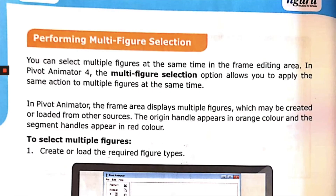Performing multi-figure selection: You can select multiple figures at the same time in the frame editing area. The multi-figure selection option allows you to apply the same action to multiple figures simultaneously. The frame area can display multiple figures created or loaded from other sources. The origin handle appears in orange color and the segment handles appear in red color.